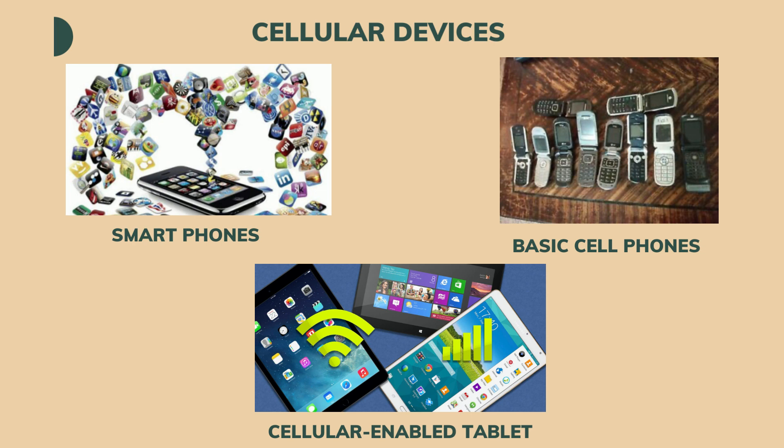A cellular-enabled tablet looks and feels like a standard tablet and can connect to Wi-Fi just like a regular tablet, but it has the extra capability of connecting to your carrier's cellular network. It includes a SIM card or is programmed with an ESN. To use one, you must purchase a separate line of service and a data plan. I personally own a cellular-enabled tablet, and it is very helpful because I can go online anywhere without needing to find a Wi-Fi hotspot — though I do have to pay an extra service fee.